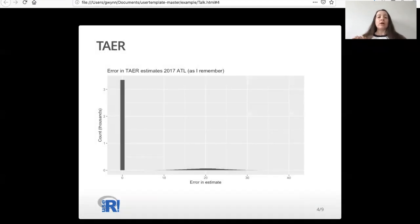One of the things I wanted to know is, does the error in the TARE estimate differ depending on if the flight lands in instrument meteorological conditions, meaning really poor weather, or visual meteorological conditions, meaning the weather's good.